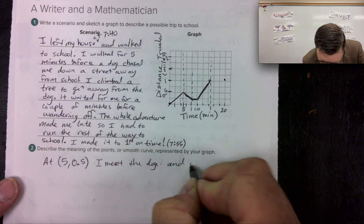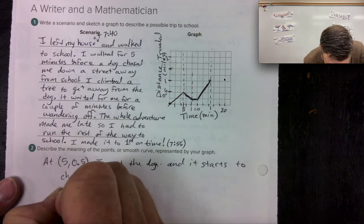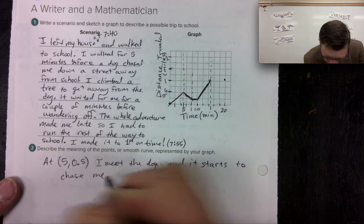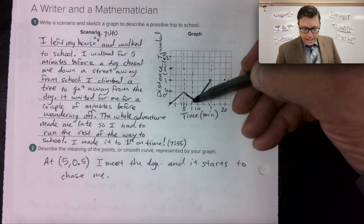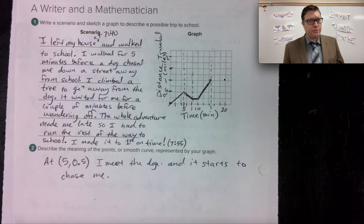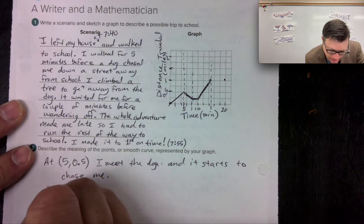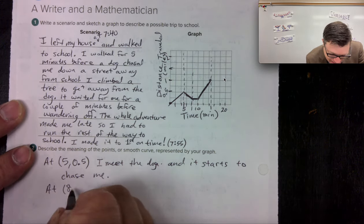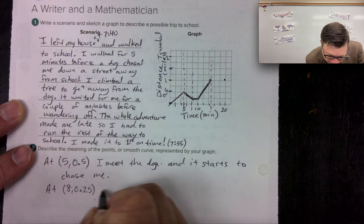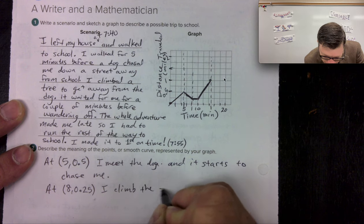And it chases me. Okay. By eight minutes, I'm a quarter mile back. So I ran back. I mean, we're going pretty fast right now. You know, three minutes, quarter mile. Here we go. So I meet the dog and it chases me. At eight comma 0.25, I climb the tree to get away.